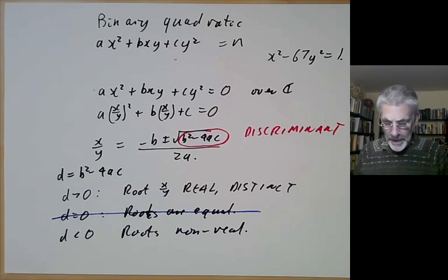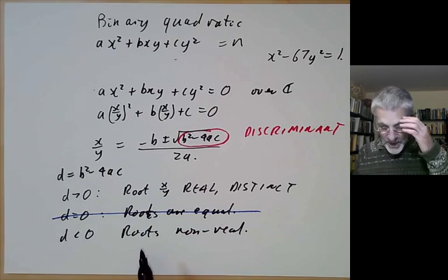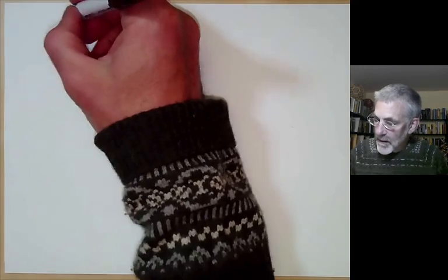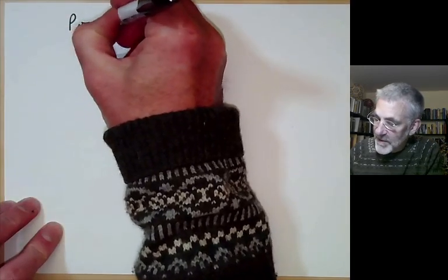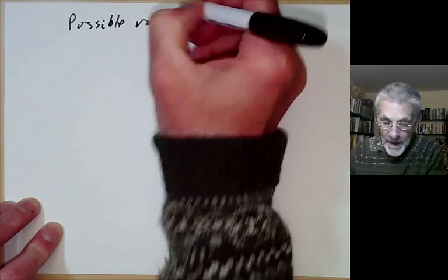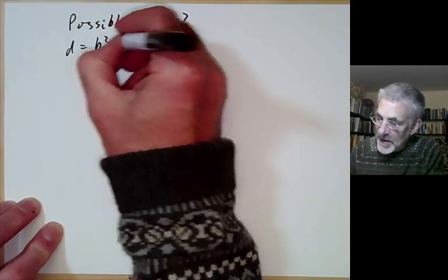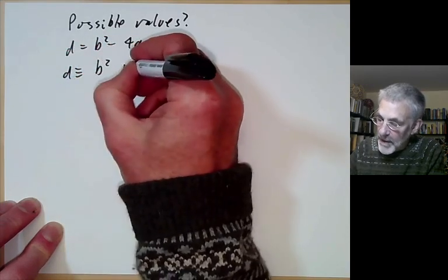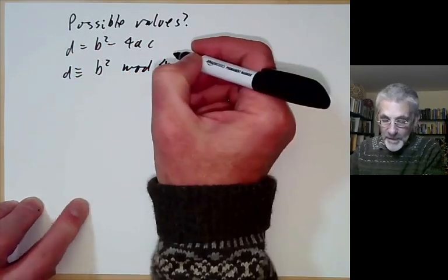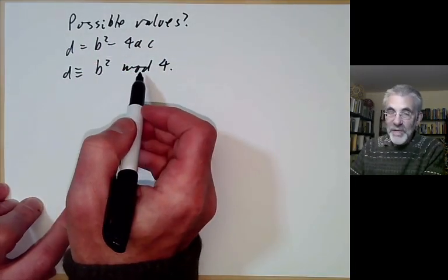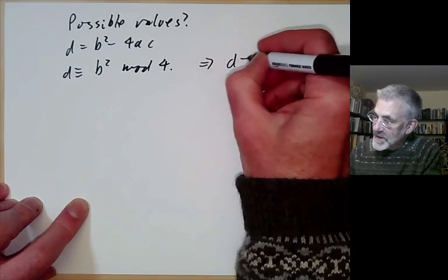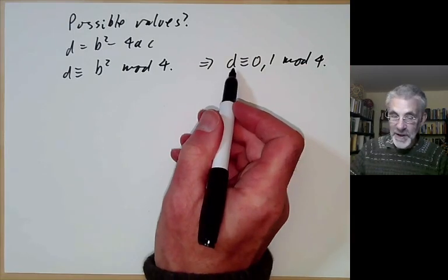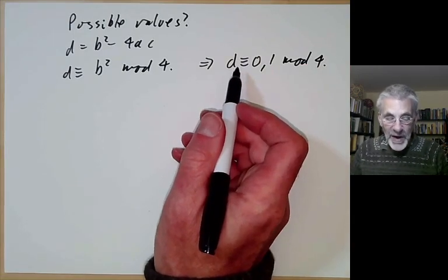We can ask what are the possible values of d. Since d equals b squared minus 4ac, d is congruent to b squared modulo 4. And b squared modulo 4 can only be zero or one. So d must be congruent to zero or one modulo 4 — not all integers can appear as the discriminant of a binary quadratic form.